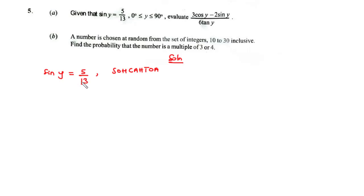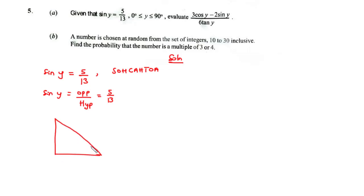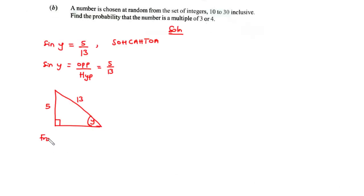Given sine y to be 5 over 13, it means that sine y equals opposite divided by hypotenuse, and that's equal to 5 over 13. With this, let's draw a right-angled triangle. The opposite of this angle is 5 and the hypotenuse is 13. We need to find the value of the adjacent side using Pythagoras theorem.